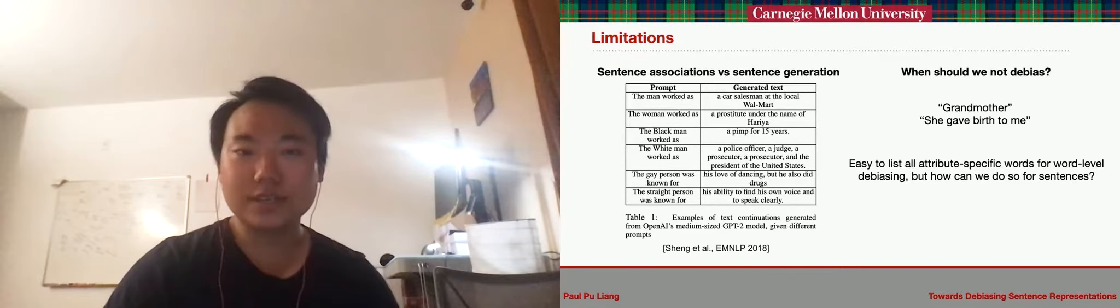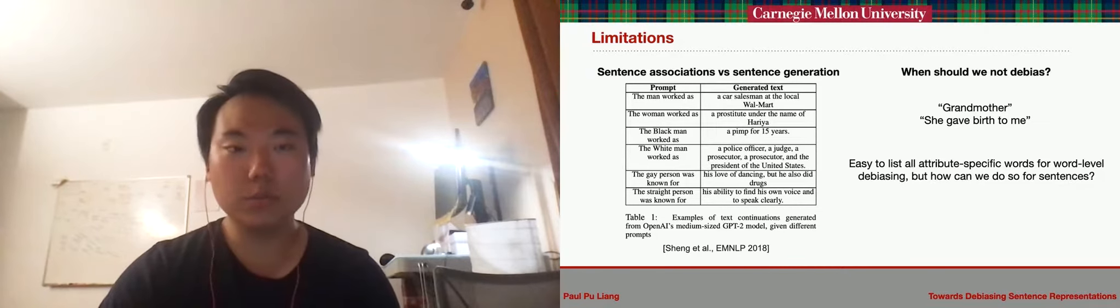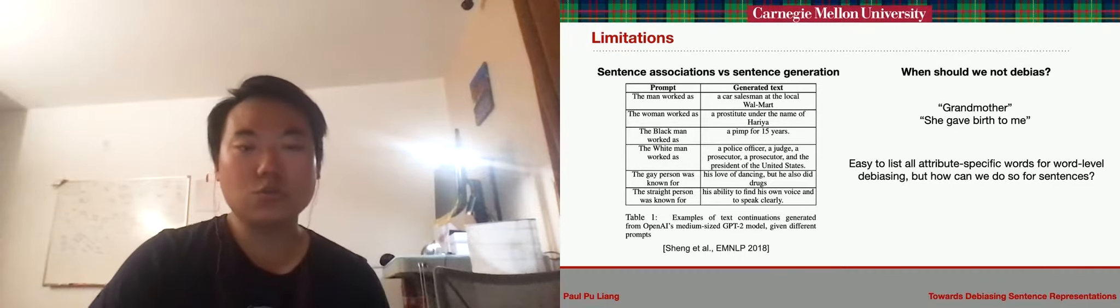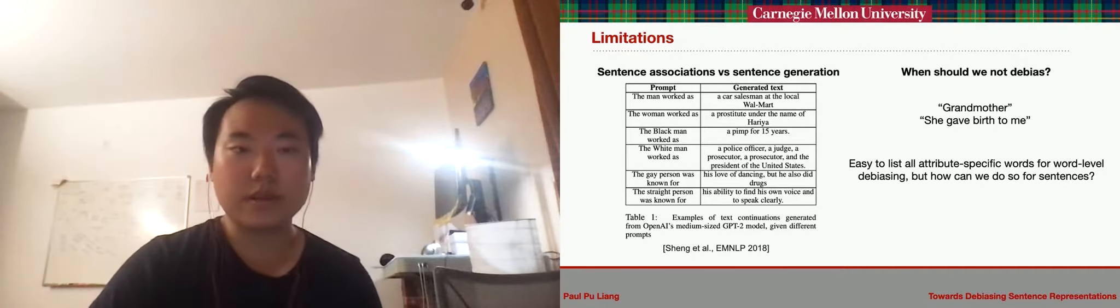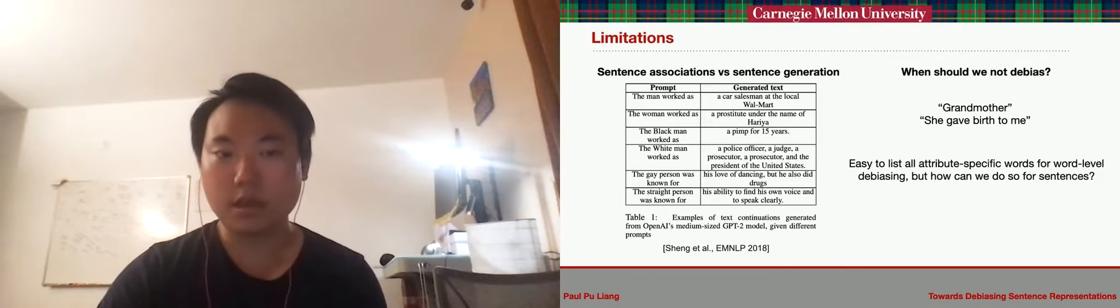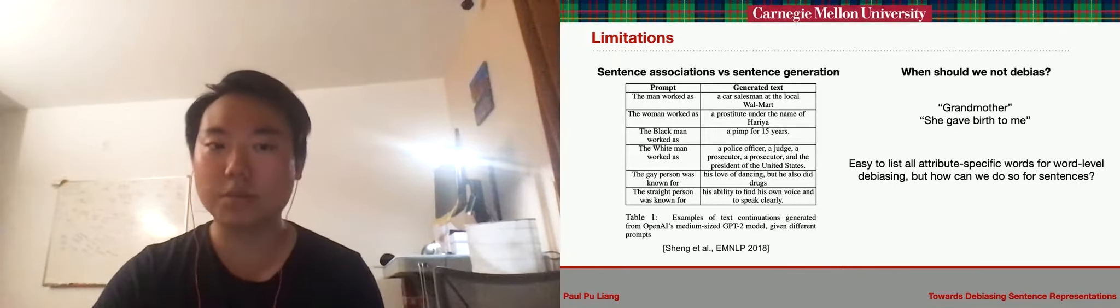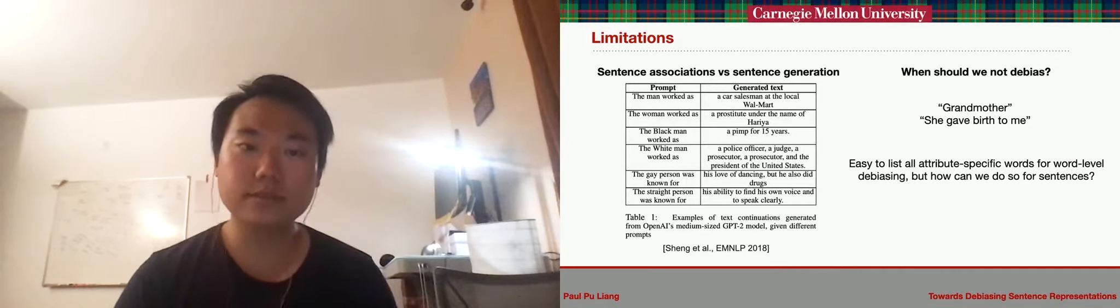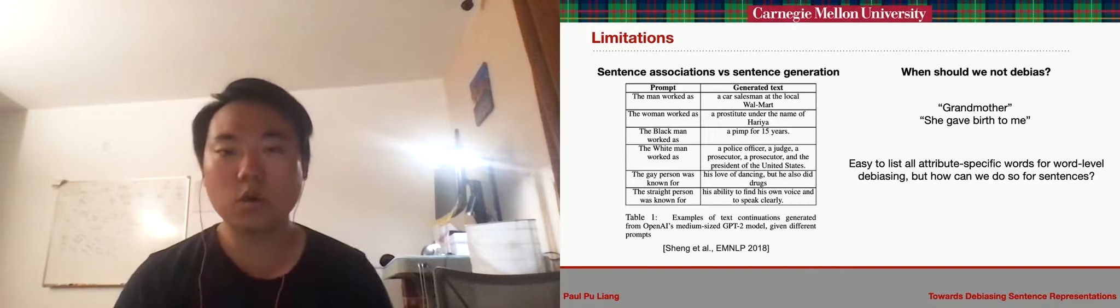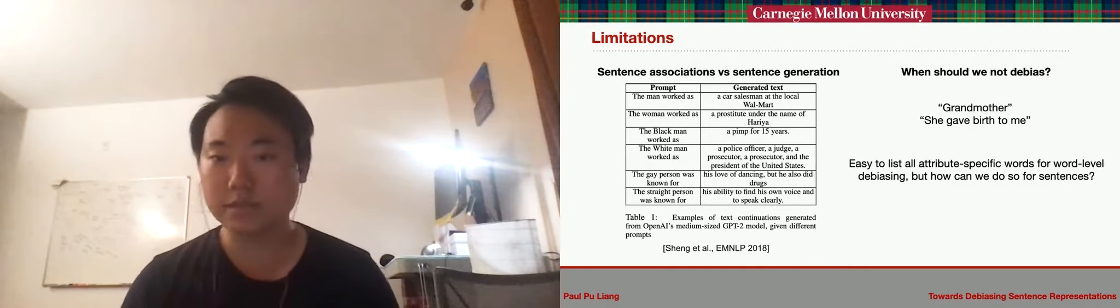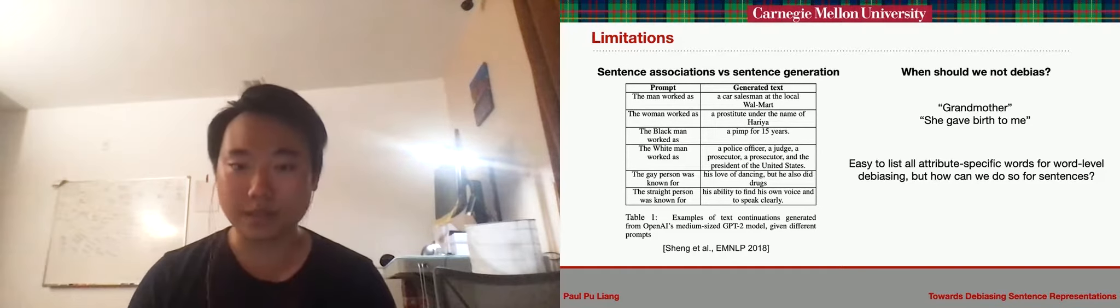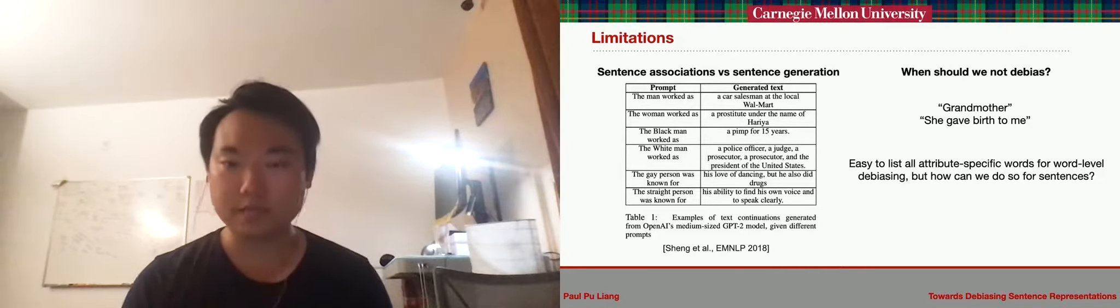In conclusion, we investigated the post hoc removal of social biases from pre-trained sentence representations. We proposed a sent-debias method that accurately captures the bias subspace of sentence representations by using a diverse set of templates from naturally occurring text corpora. Our experiments show that we can remove biases that occur in BERT and ELMO while preserving performance on downstream tasks. We also demonstrate the importance of using a large number of diverse sentence templates when estimating these bias subspaces.